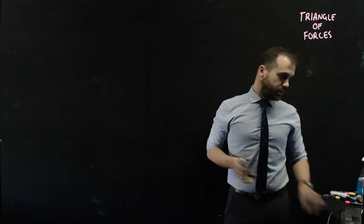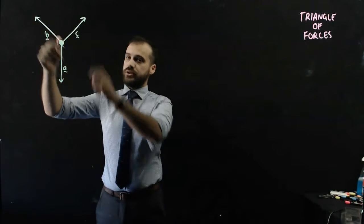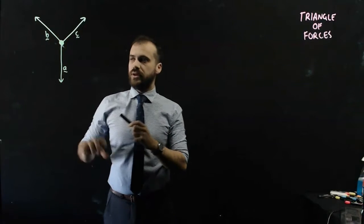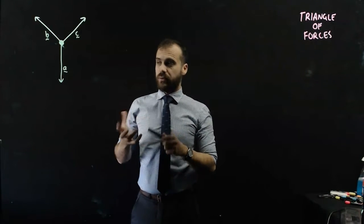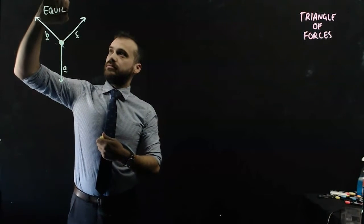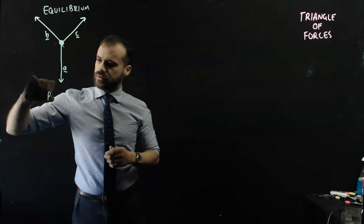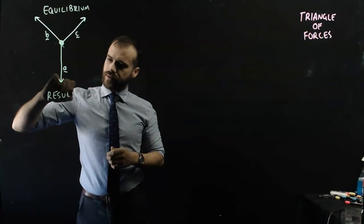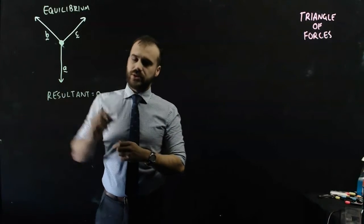I'm just going to draw up a force diagram really quickly. There's our force diagram. It might be an object hanging from a string, the weight's pulling it down, but it's in equilibrium, and that's a really important idea. If it's in equilibrium, then that means that the resultant of the three forces is equal to zero.